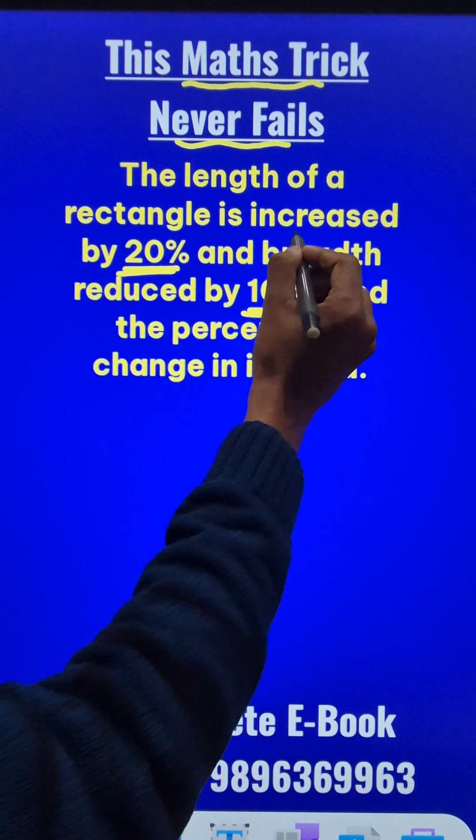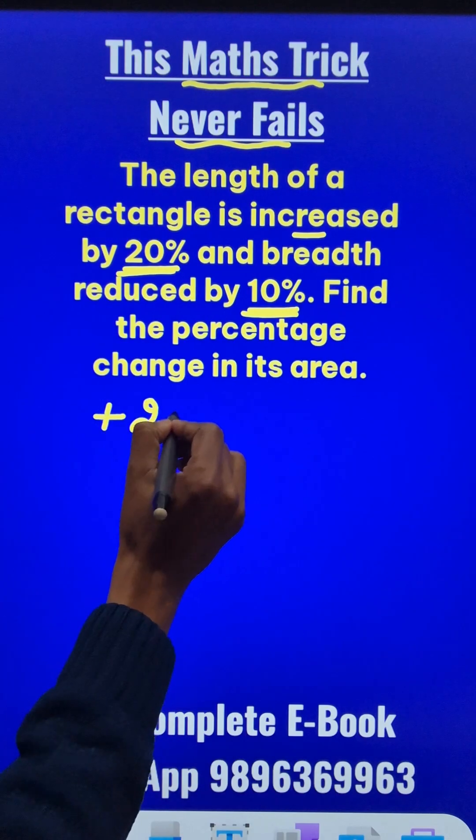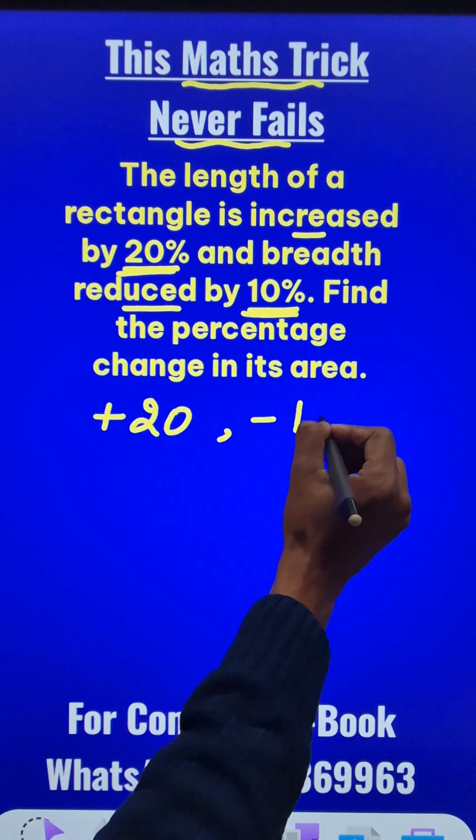Since the length is increased, so we will write plus 20 and the breadth is reduced, so we will write negative 10.